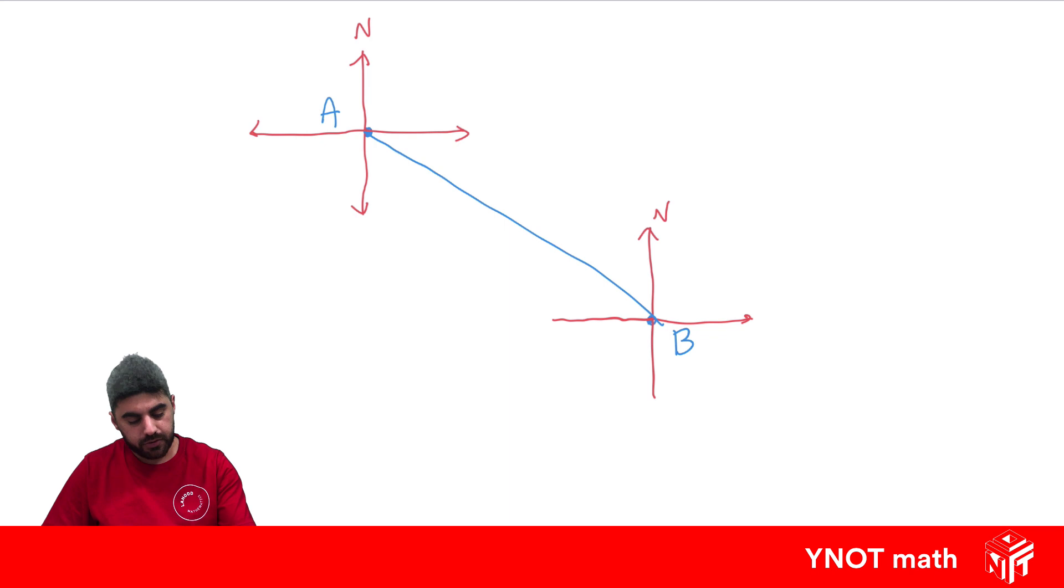If we knew this angle is 30 degrees, how can we find the bearing of B from A? Now, it's really important where we're measuring from. If we're measuring from A, we have to be measuring from A. If it was from B, we'd have to be measuring from B. When we measure a bearing, we always have to start at north and move in a clockwise direction.